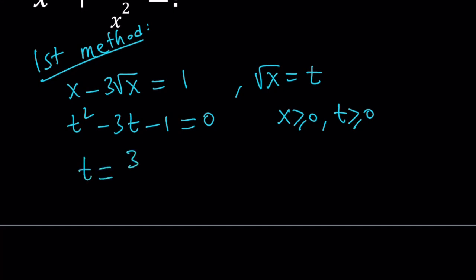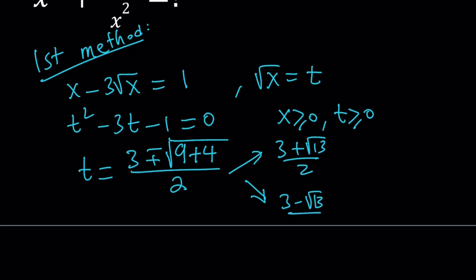And that's going to give me negative b plus minus the square root of b squared, which is 9, minus 4ac. That's going to be a plus 4, and that is going to be 13, and all of that is divided by 2. So t can take two values, either 3 plus root 13 over 2, or 3 minus root 13 over 2.